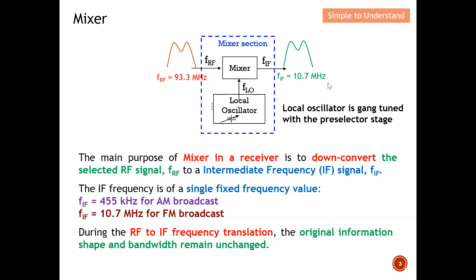During the RF-to-IF frequency translation, the original information shape and bandwidth remain unchanged. The shape remains unchanged and the bandwidth remains unchanged. The key purpose of the mixer is simply to convert the high frequency to a low frequency.